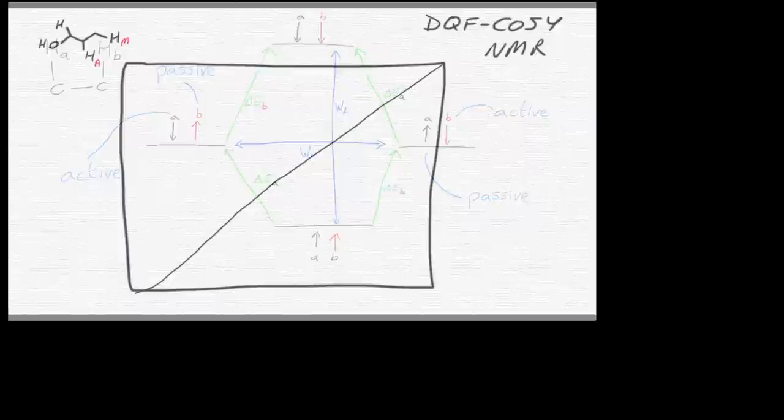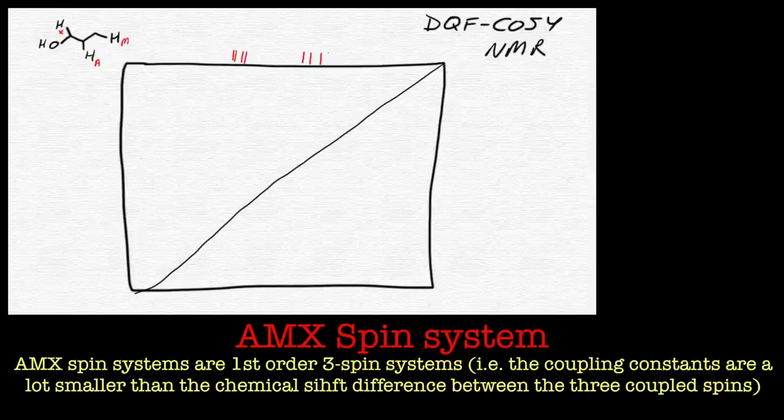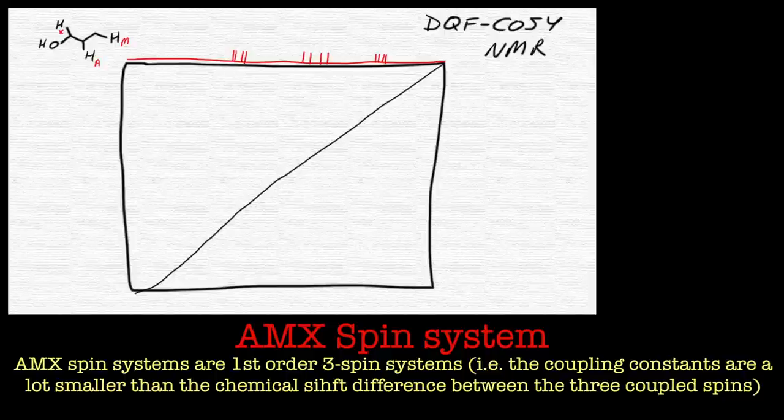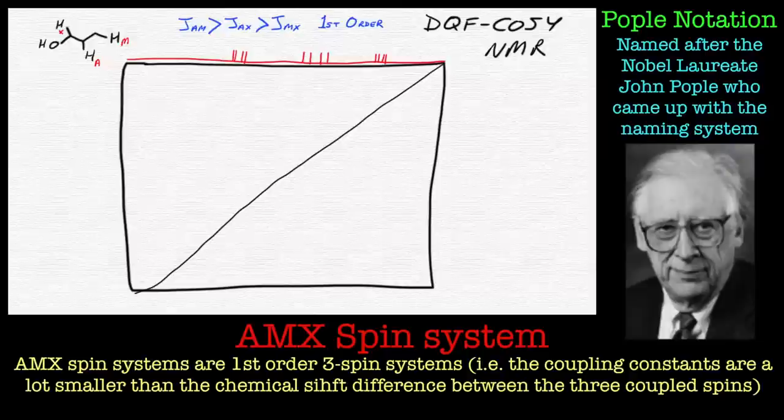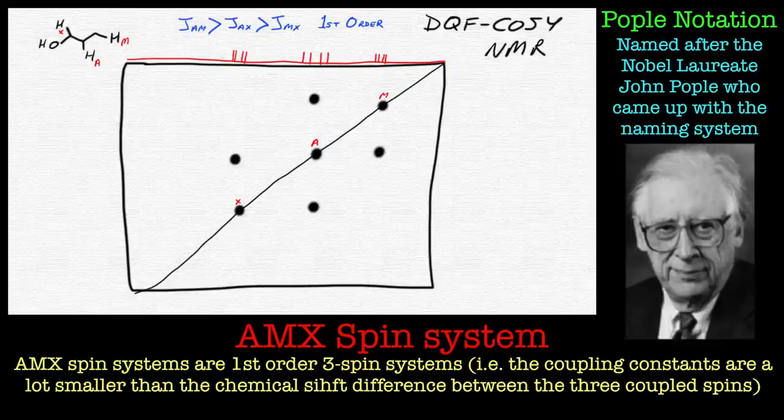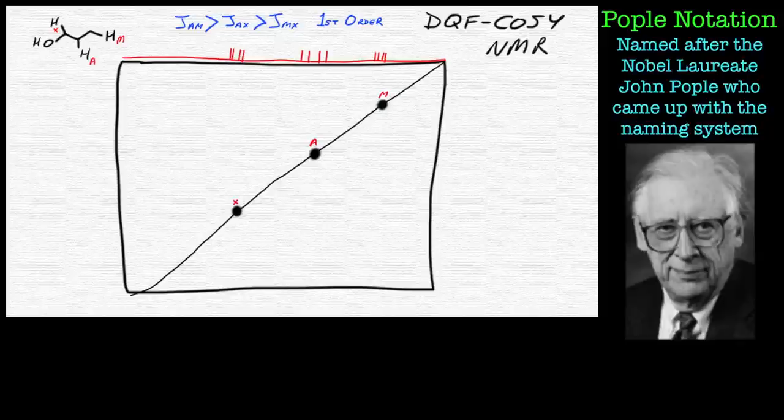So let's have a look at the NMR spectrum for a three-spin system this time. This is often referred to as an AMX system in the Pople nomenclature, or Pople notation, if you will. So we're looking at three first-order couplings, and basically that means that they're well separated from each other. Each one will exist as a set of double doublets. And if you look to the normal COSY, it looks something like this, and you'd have some fine structure in there.